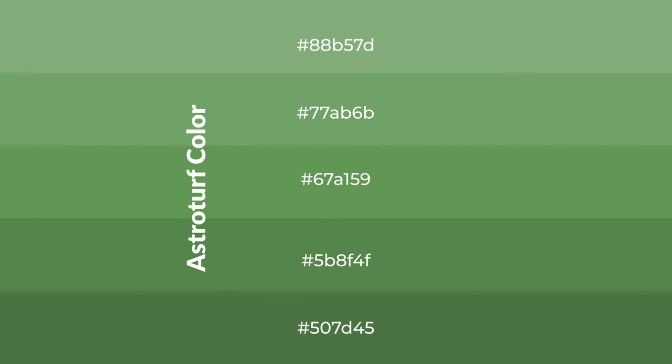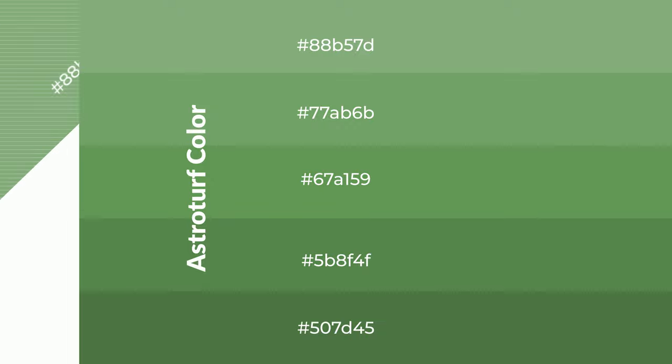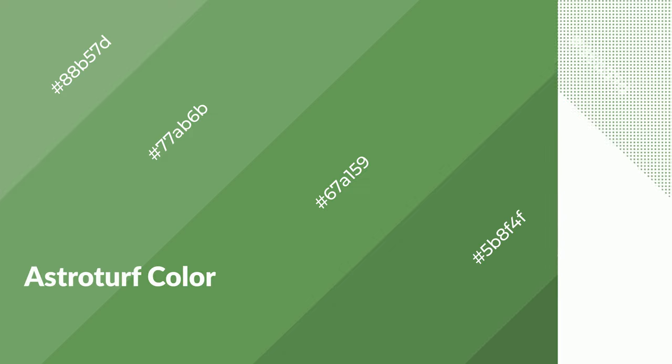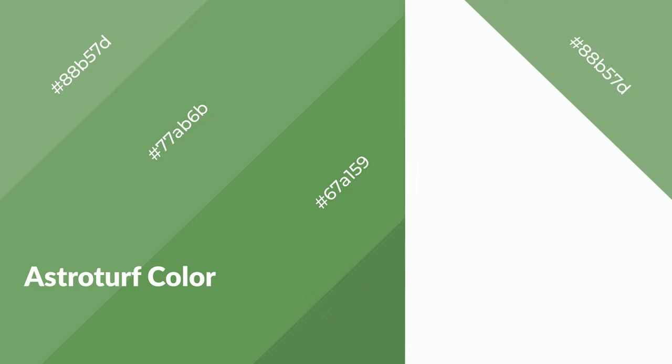To generate shades of a color, we add black to the color, and it is used in patterns, 3D effects, and layers. Shades create depth and drama. Astroturf is a cool color and it emits calming, serene, soothing, refreshing, spacious, unwinding, peace, and relaxed emotions.